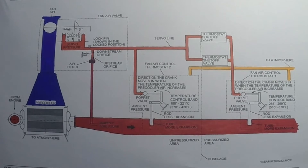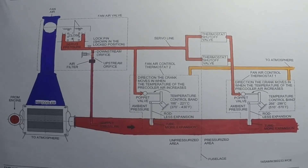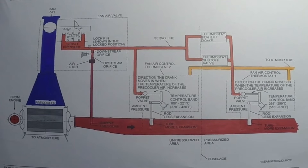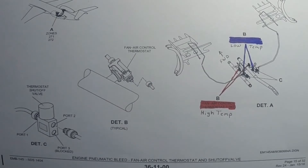The bleed air temperature is controlled by forcing cold fan air through a heat exchanger installed in a bleed air duct. The air is controlled by the fan air valve, which is a thermostat-controlled pneumatic operated valve. There are two thermostats installed on the XR aircraft and one on the LR and EP models.